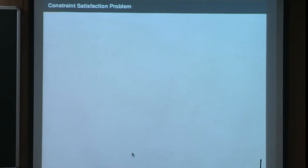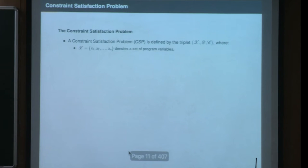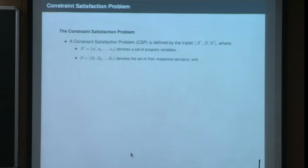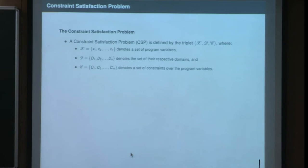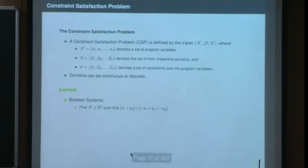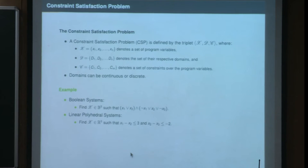The constraint satisfaction problem is a three-tuple (X, D, C) where X is a set of program variables, D is the set of their respective domains—so D1 is the domain for x1, and so on—and C is a set of constraints or relationships among the program variables. The domains can be continuous or discrete. For boolean systems, we find x belonging to B^n where B is {true, false} such that the relations are satisfied.